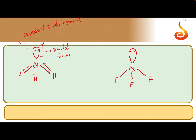But in the case of NF3, when compared with Nitrogen, Fluorine is more electronegative. So the dipole moment is towards Fluorine. Now the resultant dipole moment of these three bonds is in the downward direction.